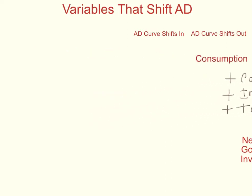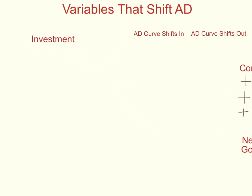Now we're going to look at the next variable, which is investment. Investment is business spending. There are factors in the economy that will encourage businesses to spend more — to build new plants and buy more equipment, to start a new product line, to invent things, to invest in their future. A lot of that is long-term spending; they're looking out in the long run. If they think they'll be able to sell their product in the long run, they will spend money today investing in their business.